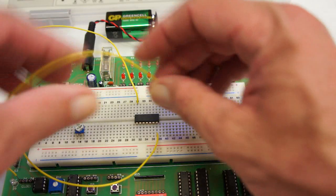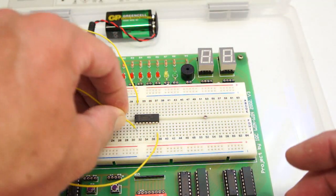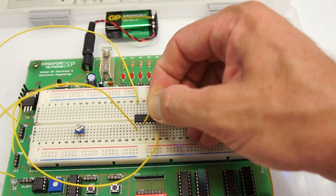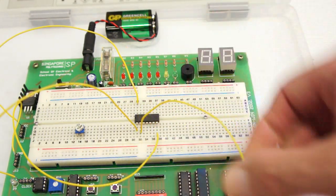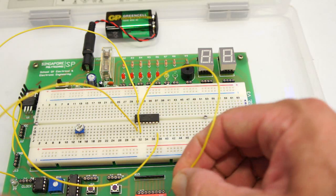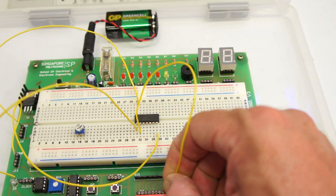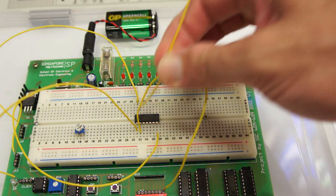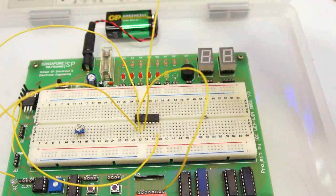We've got the pulse switch coming in to pin one, that's an input. The other input goes to a data switch. Now, the only way you can see what happens is to connect the output to an LED.